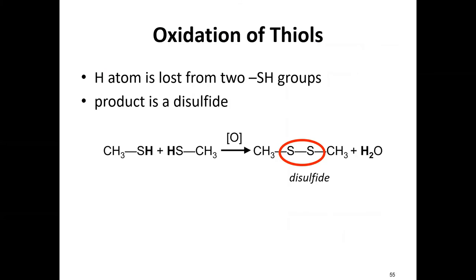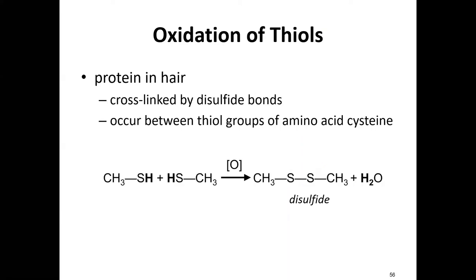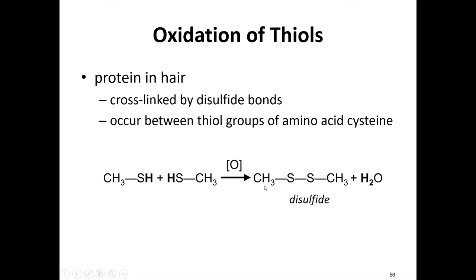Thiols can also be oxidized. This is how we form a disulfide bond: oxidizing two thiols combines them together. This is really important when talking about proteins and DNA — the proteins in your hair are cross-linked by disulfide bonds, formed between two cysteine amino acids. Breaking those disulfide bonds with heat from a hair straightener is how you straighten curly hair.